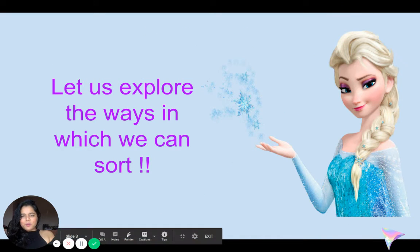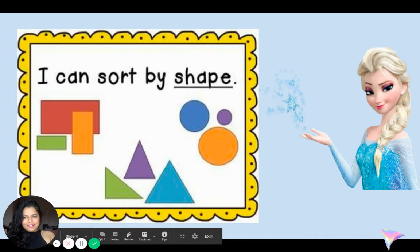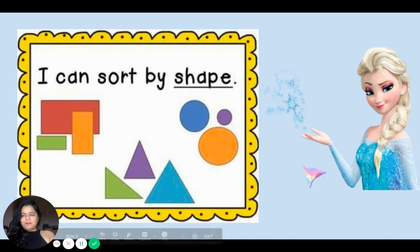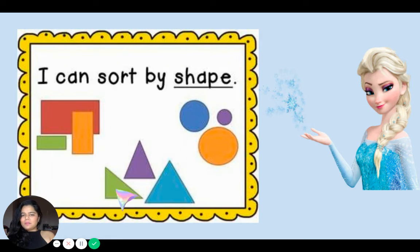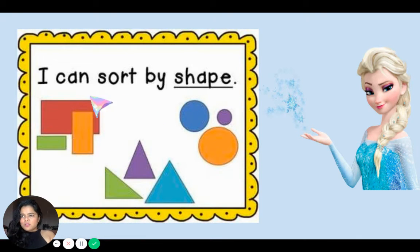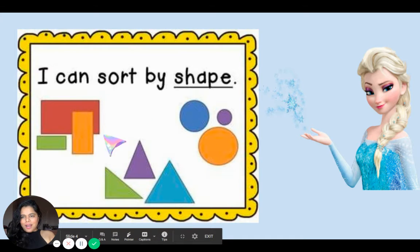Let us explore the ways in which we can sort with Elsa. I can sort by shape. So I can group all the rectangles together, all the circles together, and all the triangles together, because they're all the same shape, making three different groups based on three different kinds of shapes: rectangular shape, triangular shape, and circular shape.